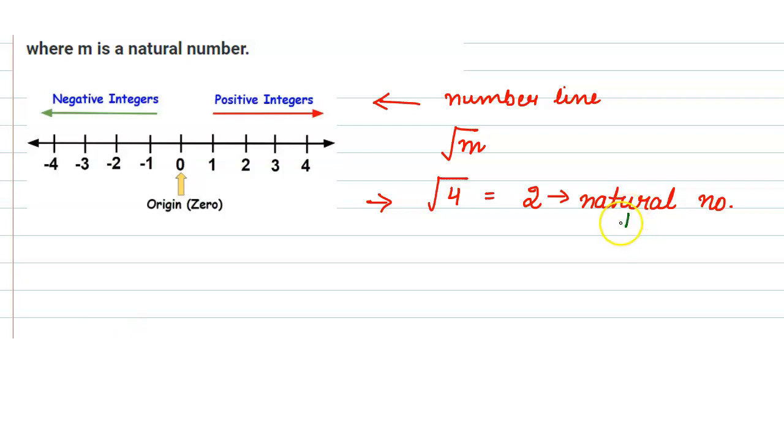As we know that natural numbers are those numbers which are also known as counting numbers. So all the positive numbers excluding 0 or negative integers are known as natural numbers.